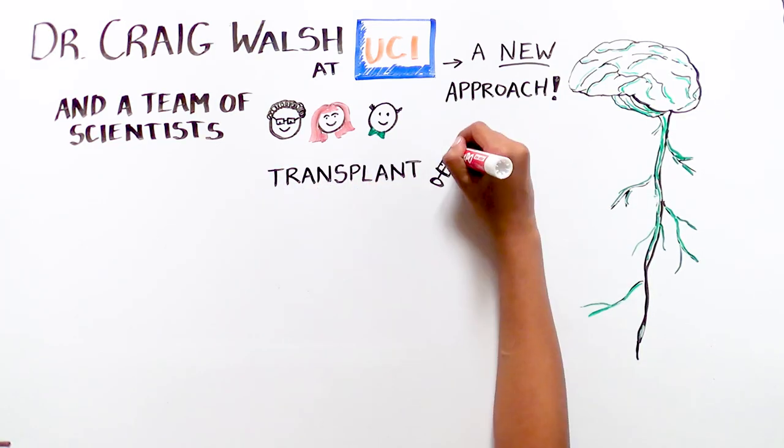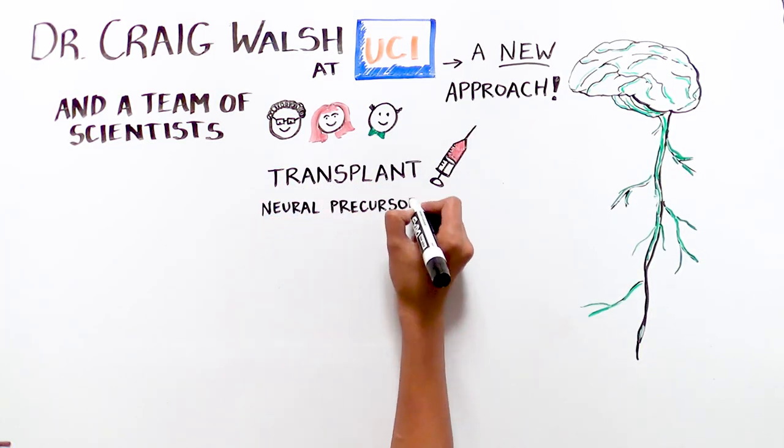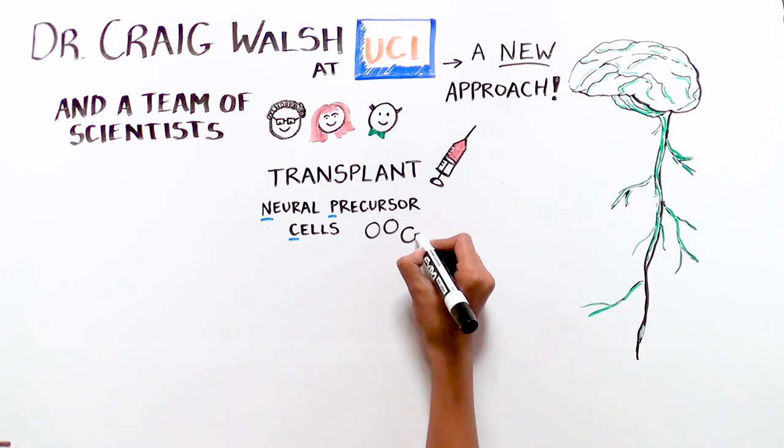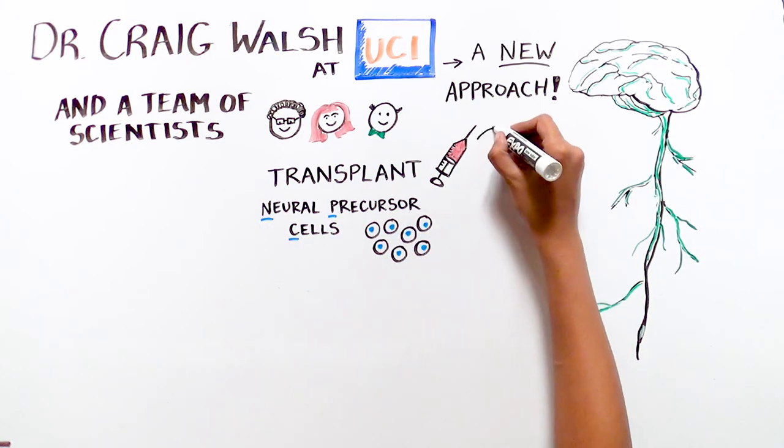Their strategy involves transplanting a type of cell called neural precursor cell, NPC, into the brain and spinal cord.